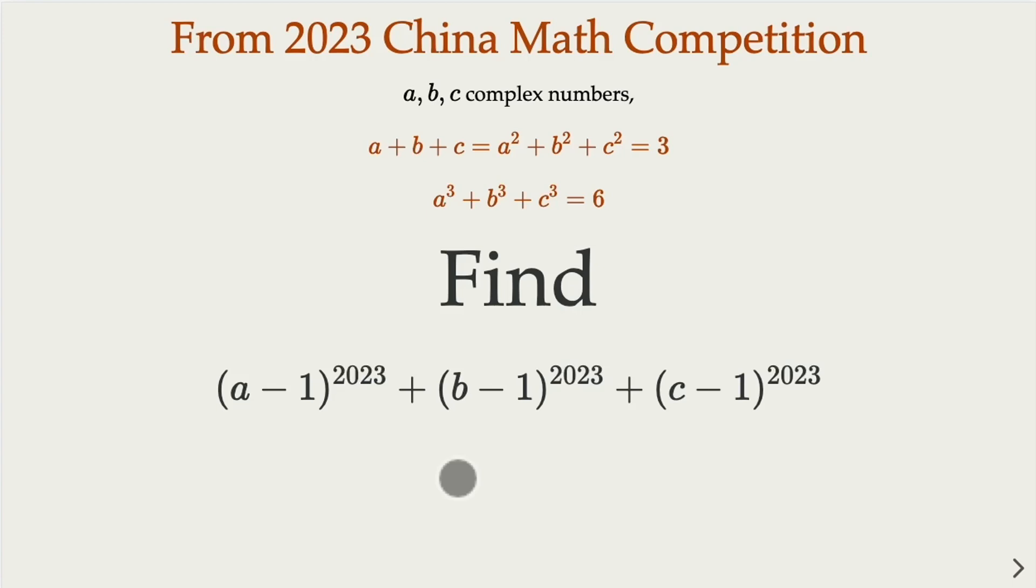This is from a regional math competition from China. ABC are three complex numbers where they satisfy these three equations: the sum, sum of squares equal to 3, and sum of cubes equal to 6. We try to find this expression.